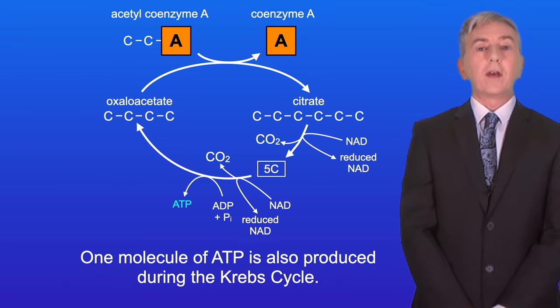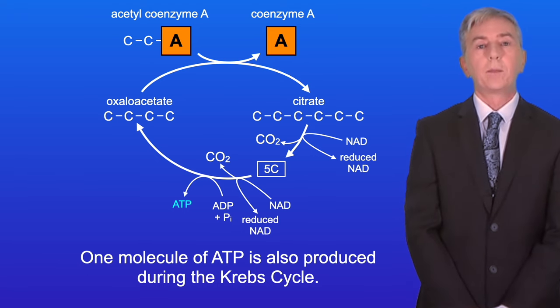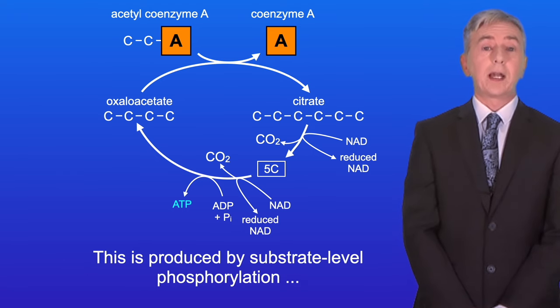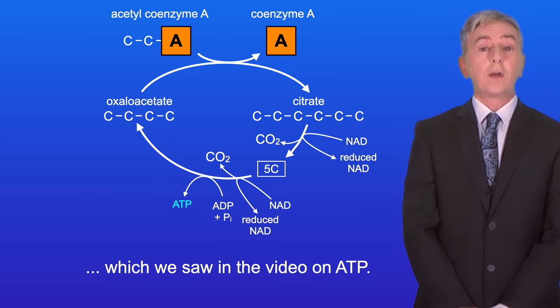One molecule of ATP is also produced during the Krebs cycle. This is produced by substrate level phosphorylation which we saw in the video on ATP.